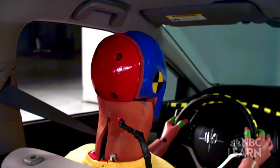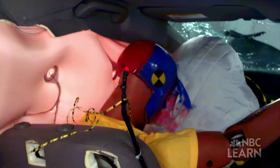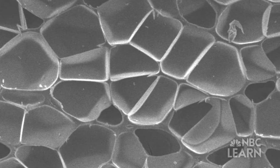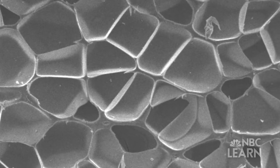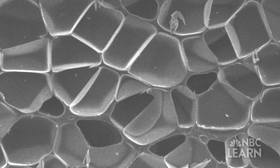Think of an airbag's role in a car crash, cushioning passengers from the impact. In a bike helmet, these tiny pockets of air serve the same purpose, absorbing the energy of an impact in the event of a crash.